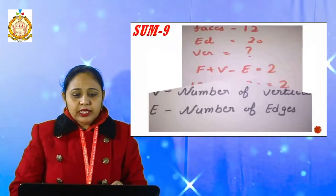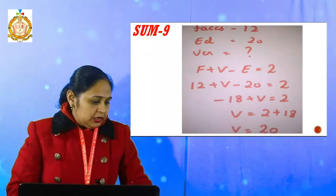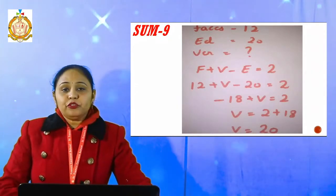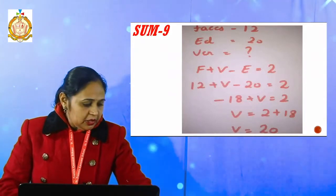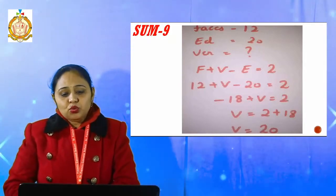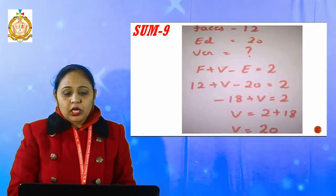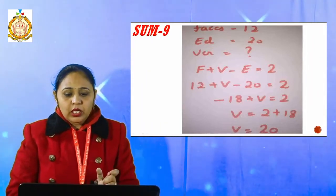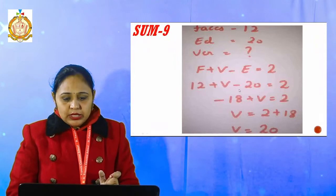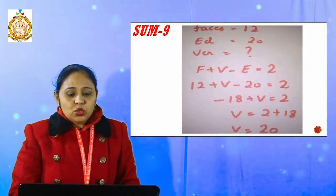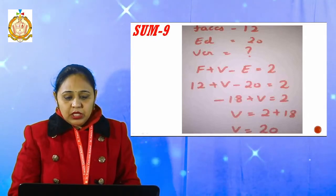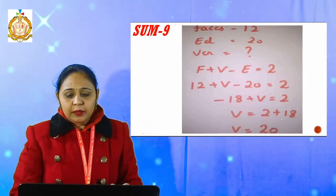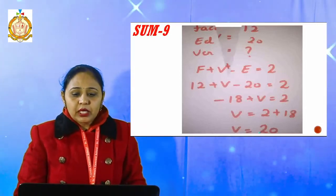Now we will see sum number nine. The given statement: a solid has 12 faces and 20 edges, and we want to find the vertices. Applying the formula: Faces + Vertices − Edges = 2, so 12 + Vertices − 20 = 2. That gives 12 − 20 = −8, so Vertices − 8 = 2, meaning the vertices equal 10.